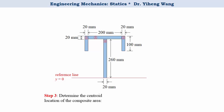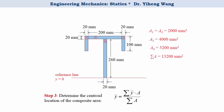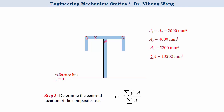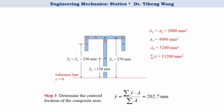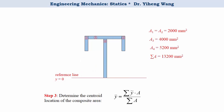Then step three: determine the centroid location of the composite area using the formula we learned before. You need to know the area of each component area as well as the total area, and also y-tilde, the location of the centroids for each component area. Since they are all rectangles, the individual centroid locations shouldn't be difficult to find — just make sure all y-tilde values are expressed with respect to the same reference line. Plugging in the information gives y-bar equal to 202.7 millimeters, which is the centroid location for the composite area. We can then mark the centroidal x-axis on the composite area.